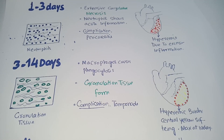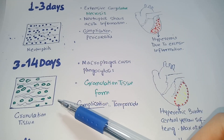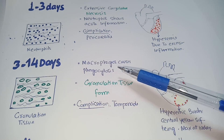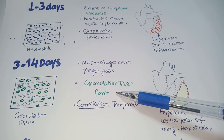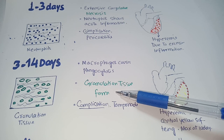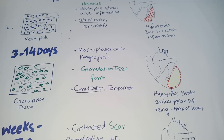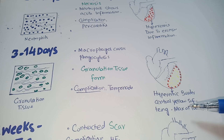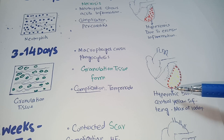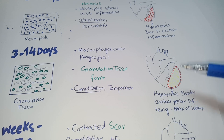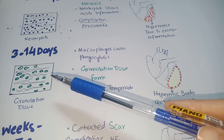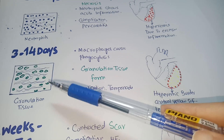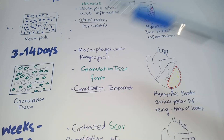From 3–14 days following myocardial infarction, the changes are characterized by phagocytosis and granulation tissue formation. Granulation tissue gives a yellow-stained or soft appearance to the infarcted area of the heart, and microscopy following 3–14 days shows granulation tissue.